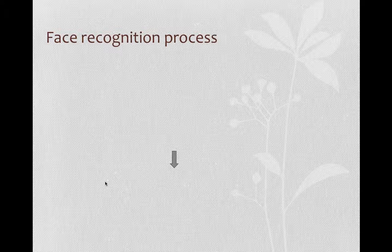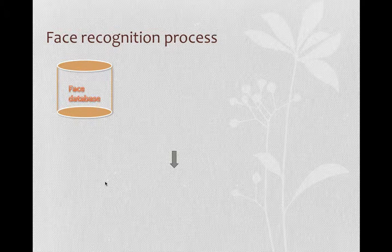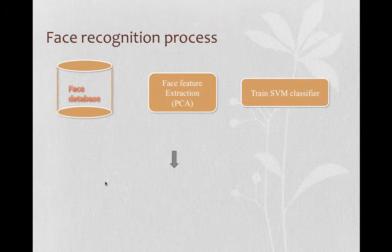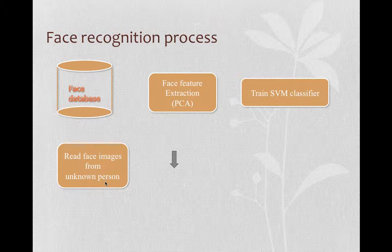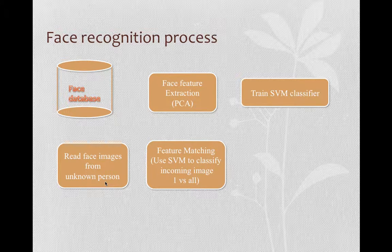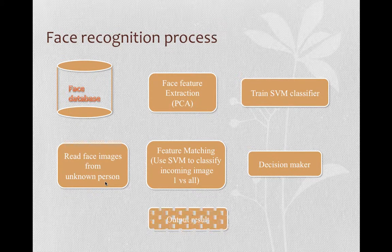For the face recognition process, we first read data from the ORL face database, then perform face feature extraction. We use PCA to reduce the dimensionality, and then use the extracted eigenfaces to train the SVM classifier. After that, we read unknown faces from user input, perform feature matching using SVM to classify the incoming images, decide which class they belong to, and then make a decision to find the most accurate match and output the result.